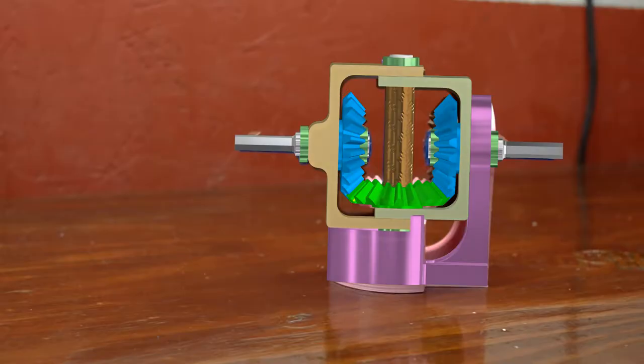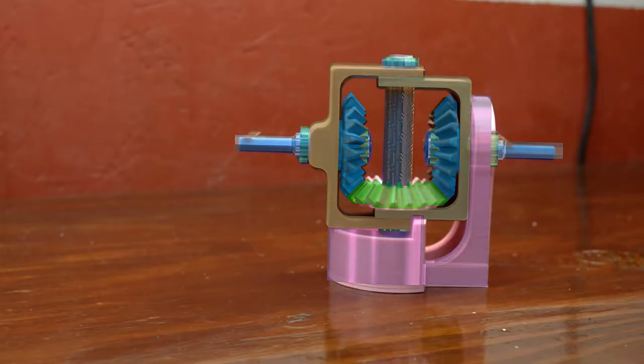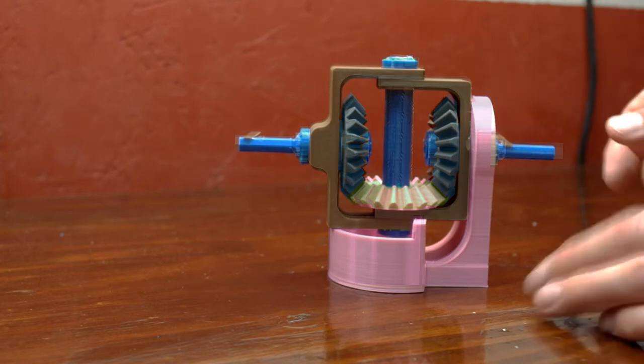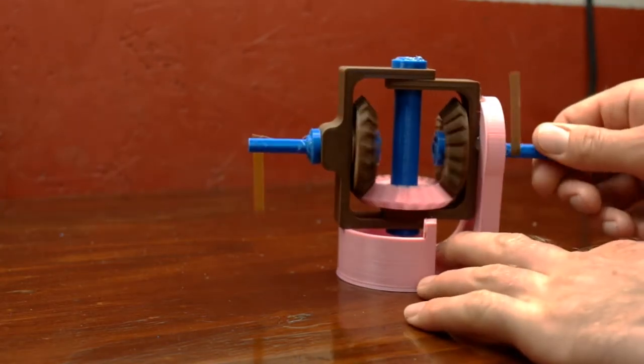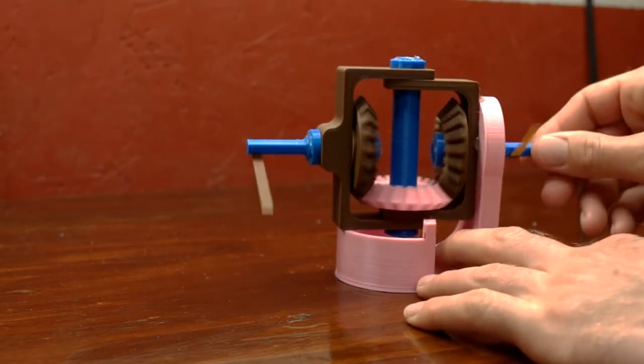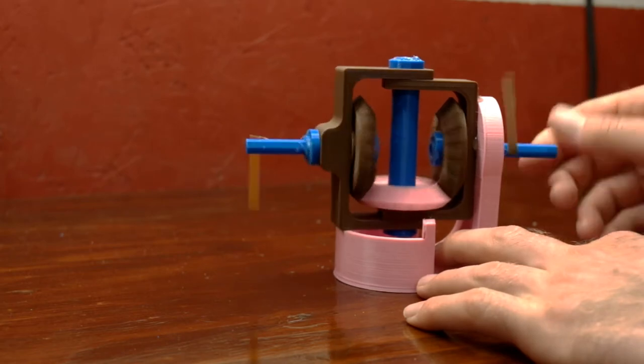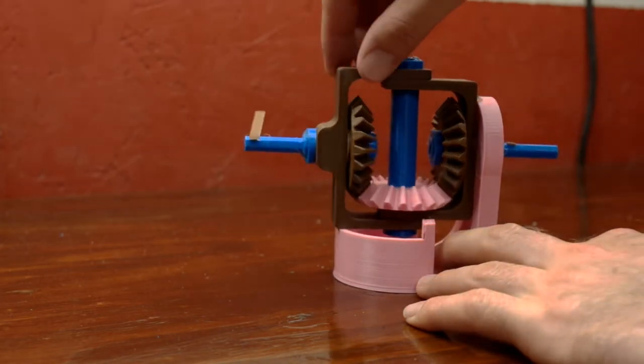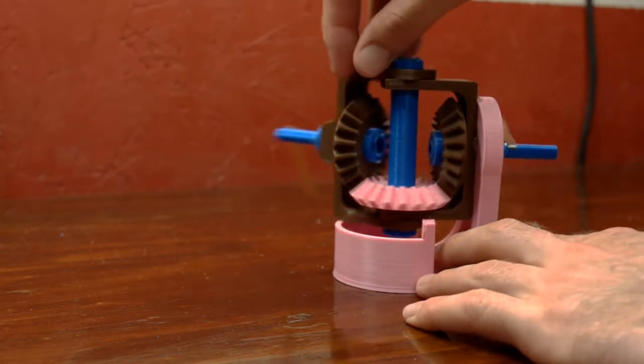Here's the final result. Everything here is 3D printed with the exception of the hot glue used to hold the shafts in place. I've added these little brown tabs so that it's more easy to visualize the rotational direction. Everything here runs pretty smoothly.